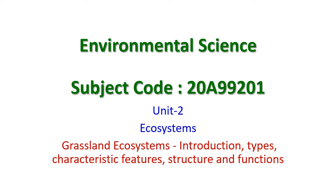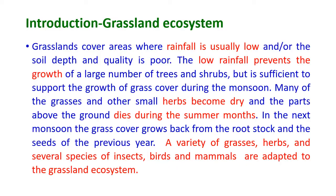Hello friends, welcome to Environmental Science. In this video we are going to see the grassland ecosystems — their types, characteristic features, structure and functions. Introduction to grassland ecosystem: the grasslands cover areas where the rainfall is usually low and/or the soil depth is poor and the quality of soil is also poor.